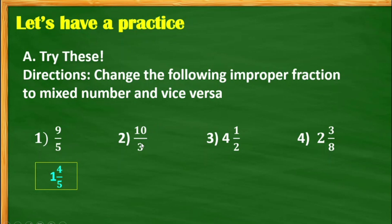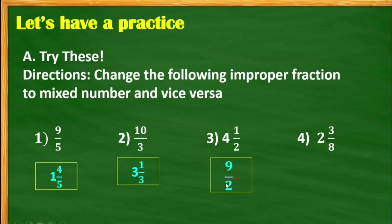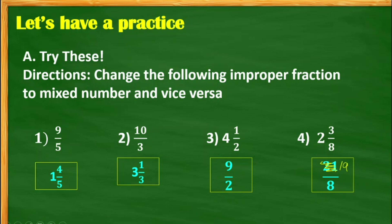Next, 10 thirds. The answer would be 3 and 1 third. Because how many 3s in 10? We have 3, and then the remainder is 1, and then copy the denominator 3. For number 3, we are going to change this one to an improper fraction. The answer would be 9 halves: 2 multiplied by 4, the answer is 8, plus 1, we have 9, and then copy the denominator 2. For number 4, the answer is 19 eighths: 8 multiplied by 2 is 16, plus 3, the answer is 19, so 19 eighths.